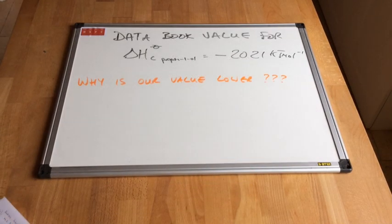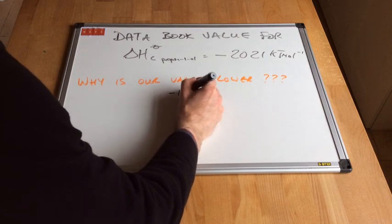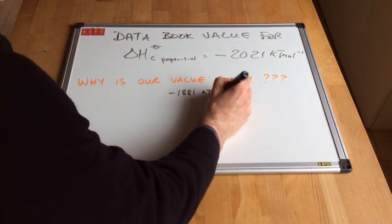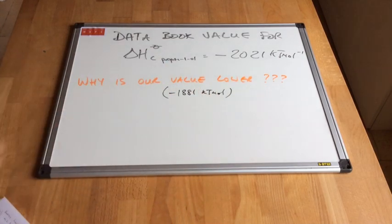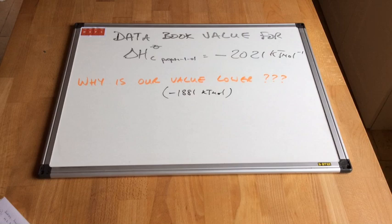What we're going to do now is we're going to compare our value. Remember we got minus 1,881 kilojoules per mole. So we're going to compare our recorded value from our experimental calorimetry method. We're going to compare that with the data book value, which you can see I've written up there. The data book value for the standard enthalpy change of combustion is minus 2,021 kilojoules per mole. What could be causing the difference?